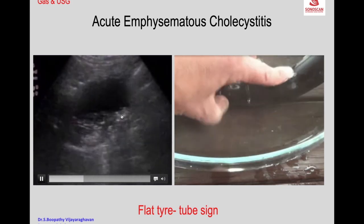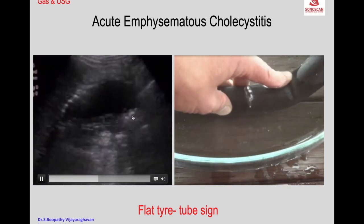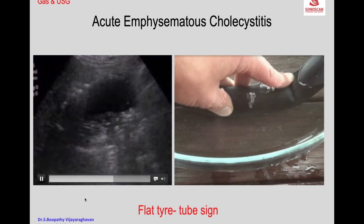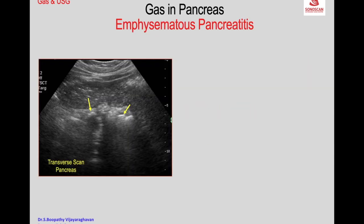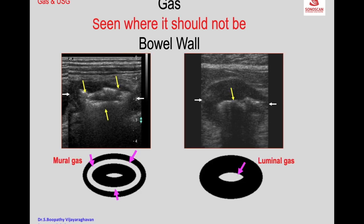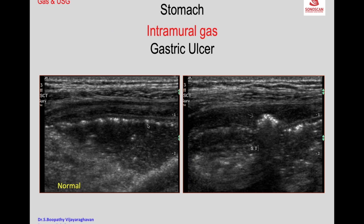Here you see gas bubbles from the posterior aspect moving in the lumen of the diverticulum. This is an acute patient presenting with acute upper abdominal pain who is quite sick. The gas is not in the center but in the wall of the bowel, indicating pneumatosis. Mark the left hypochondrium.